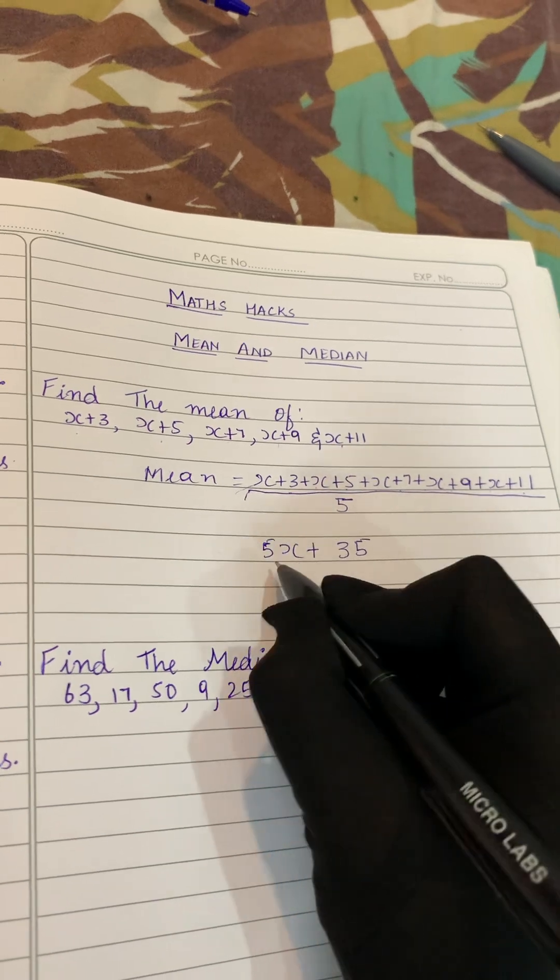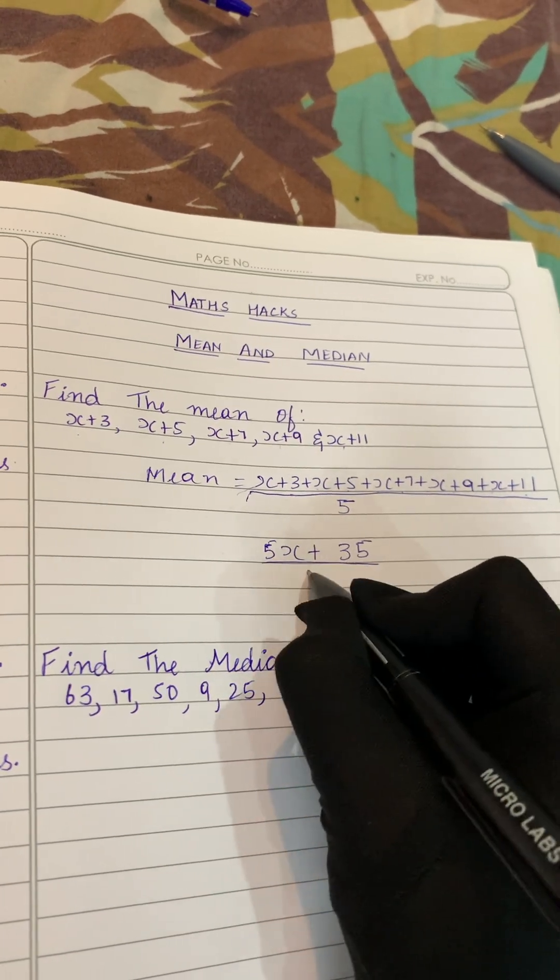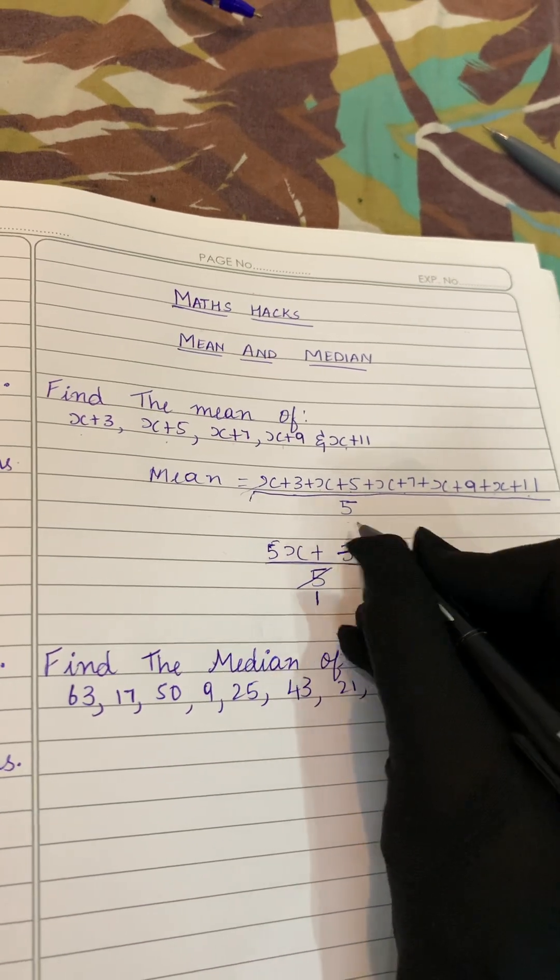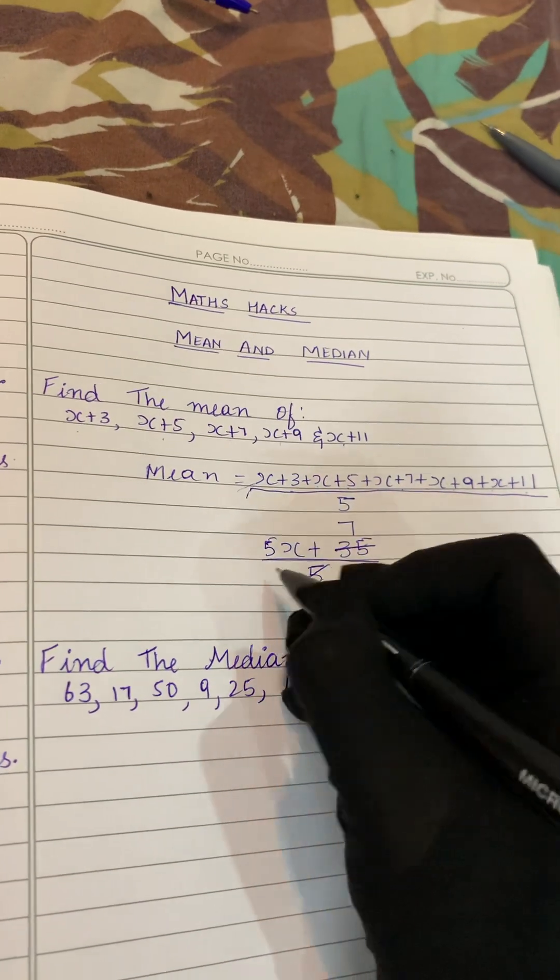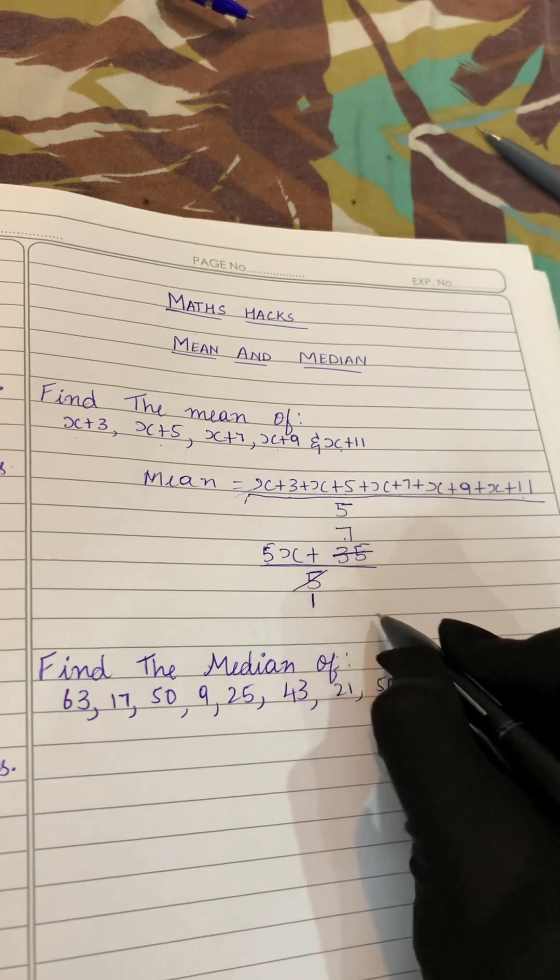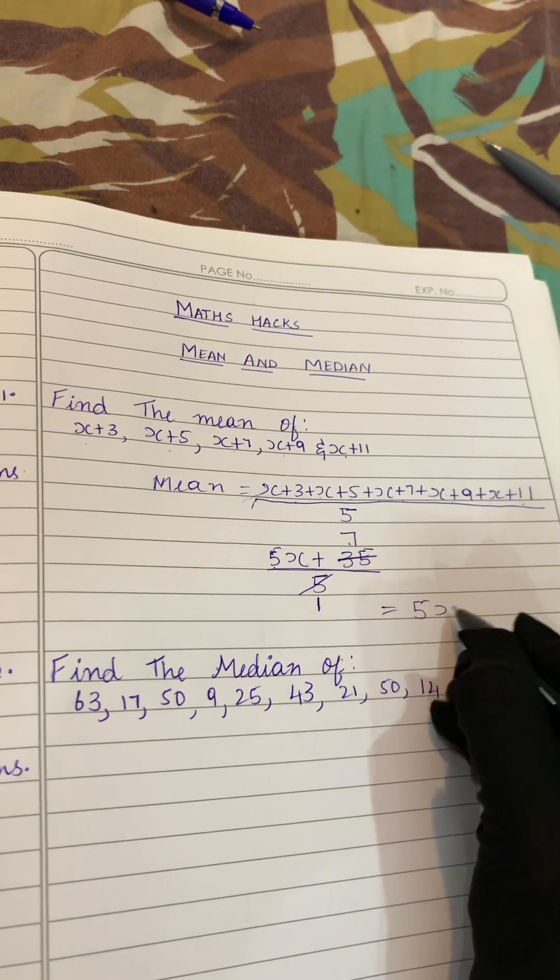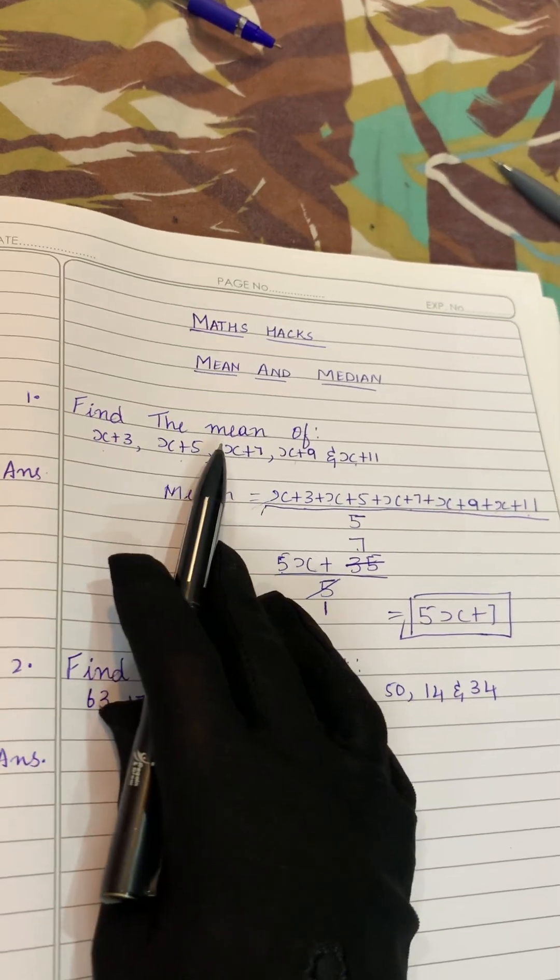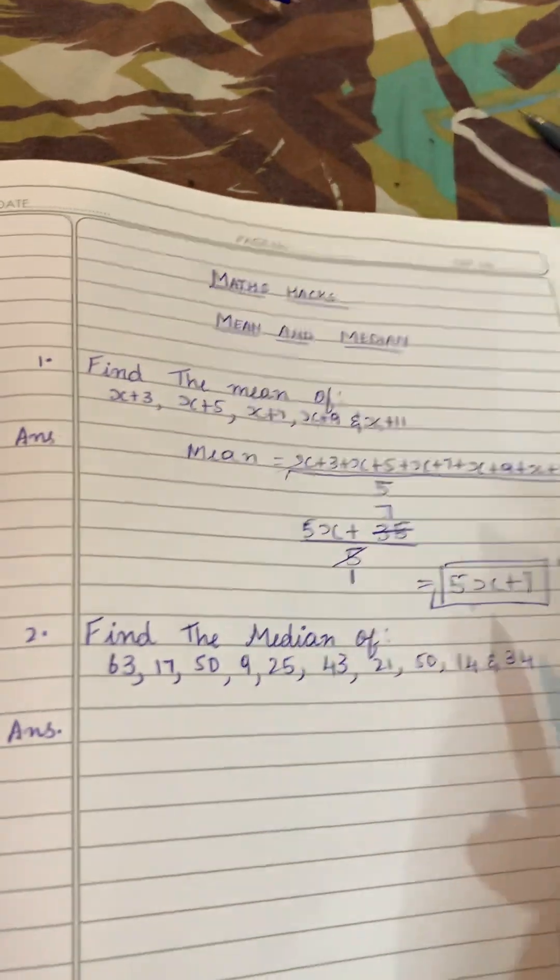So here we'll put 5x plus 3 plus 5 plus 7 plus 9 plus 11 gives you 35. So 5x plus 35 divided by 5. Now we will cancel. 5 ones are 5, 5 sevens are 35. What is left? 5x plus 7. So our mean is 5x plus 7, this is our final answer.